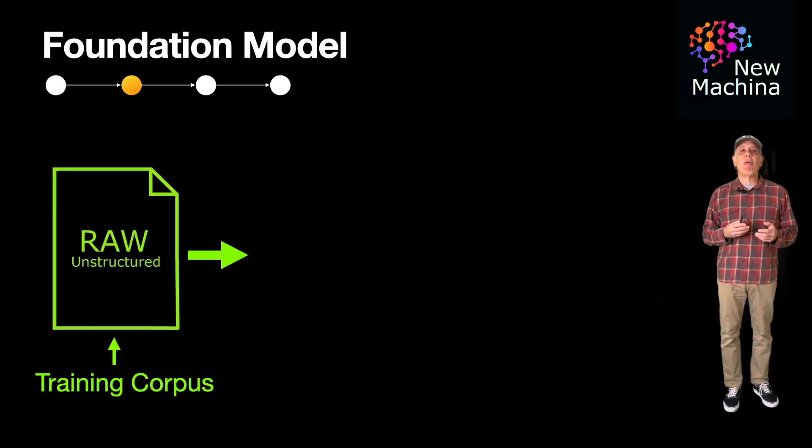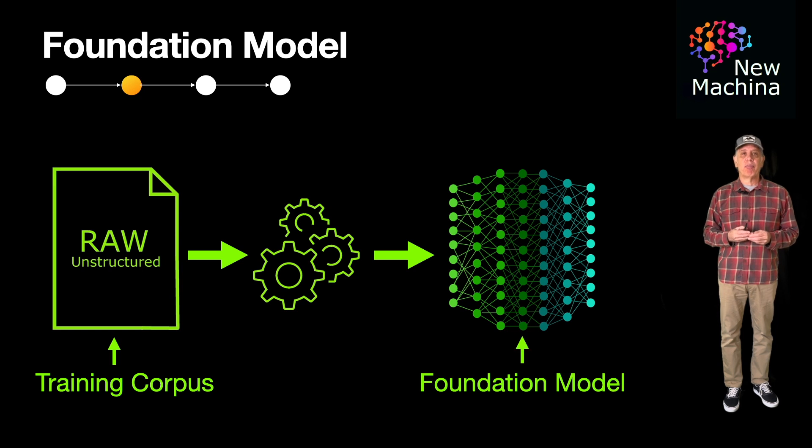The second category of model is foundation models. This next generation ML model are trained on vast amounts of unlabeled unstructured data. Vast amounts mean internet scale. Foundation models learn complex patterns and representations directly from the raw input data.